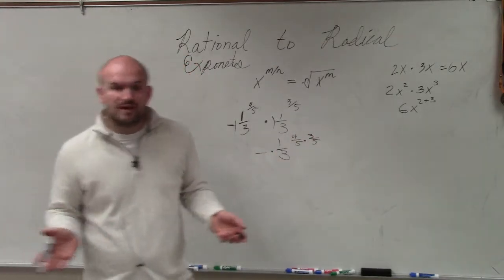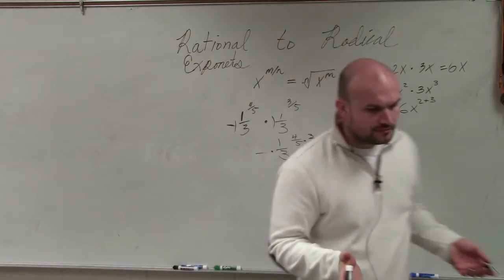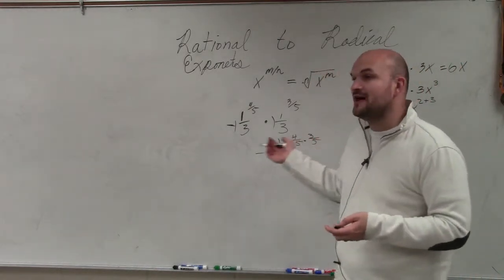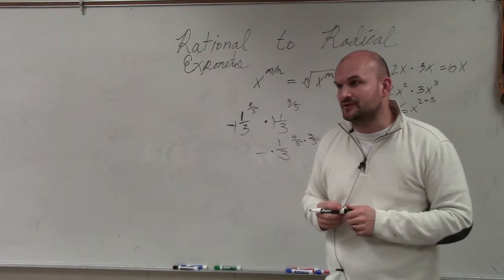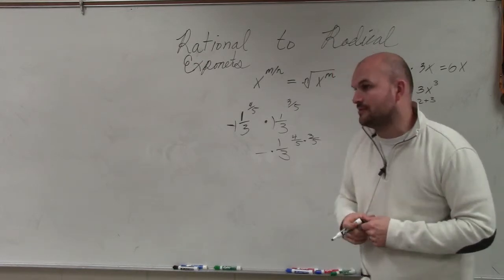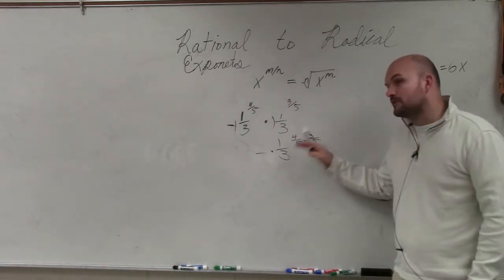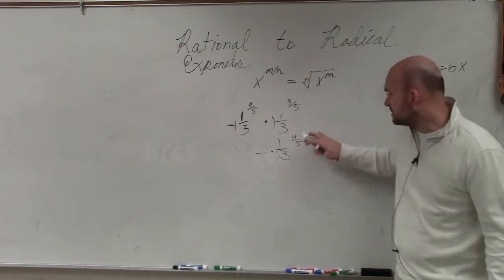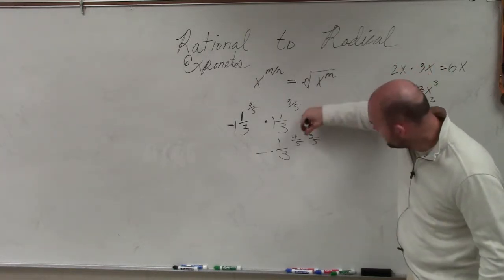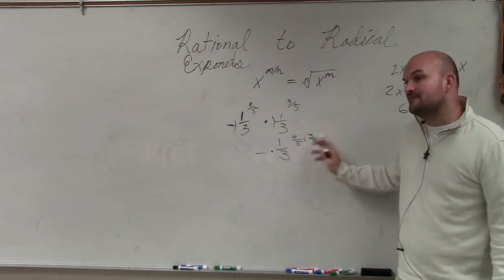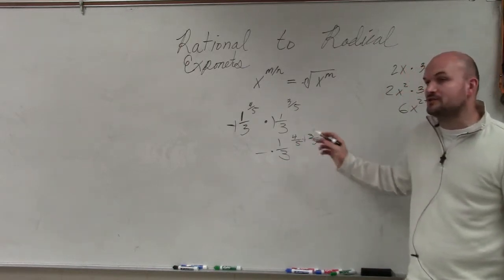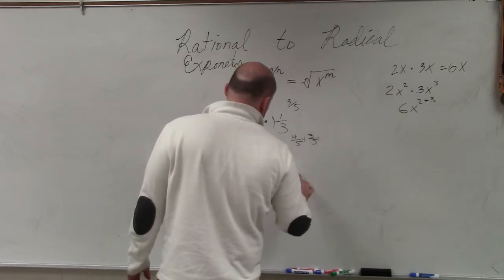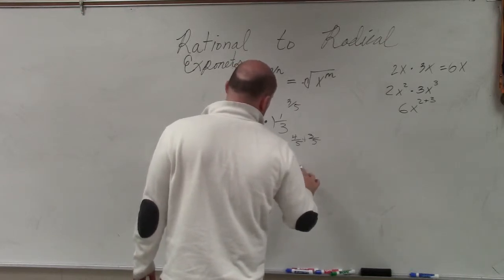When we add fractions, we're going to add the powers. We do 4 plus 3, which would be 7. So 4 fifths plus 3 fifths is going to be 7 fifths. Therefore, that's going to be 7 fifths.